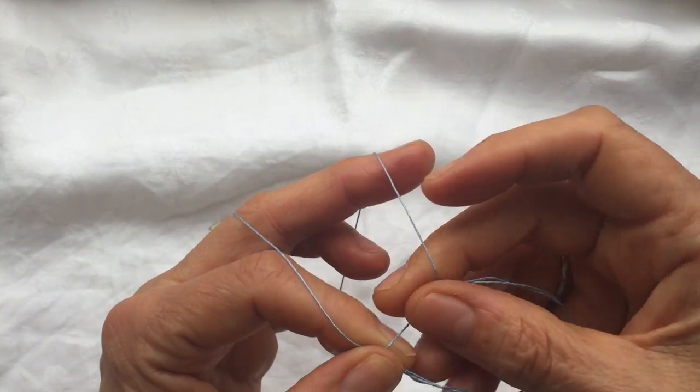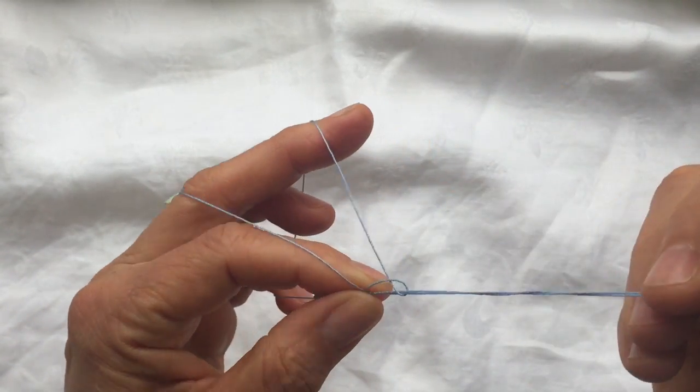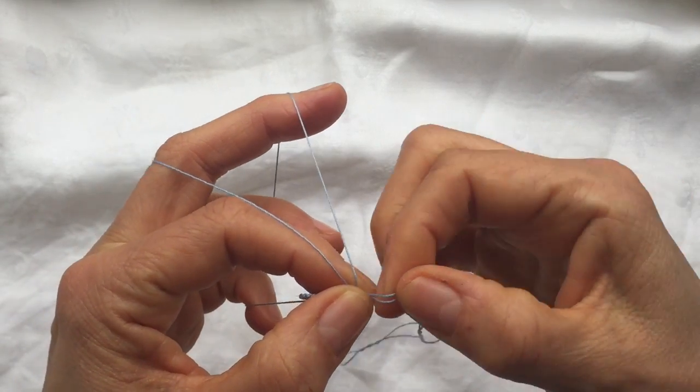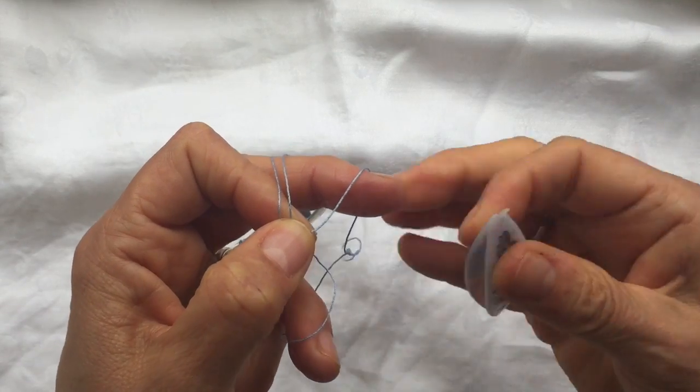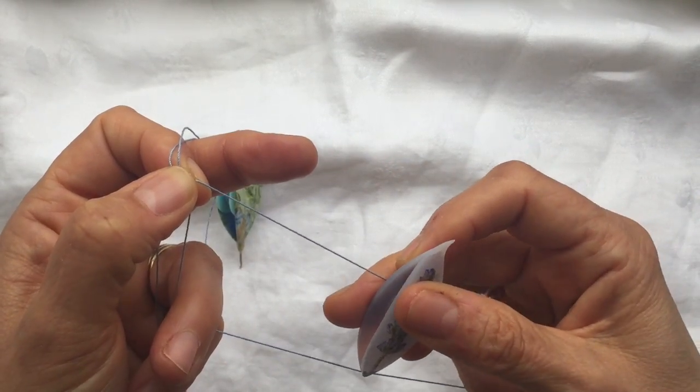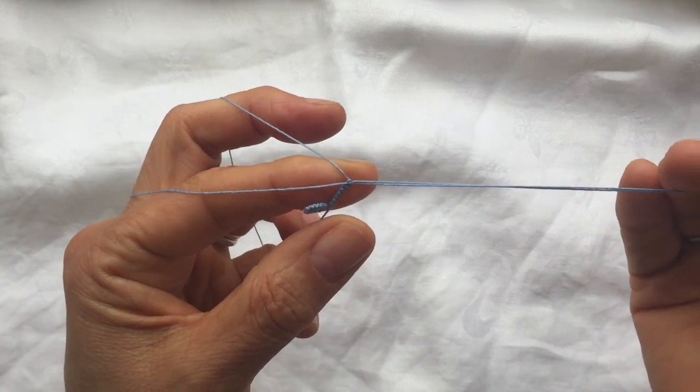So you can either tat, finger tat as they call it - that would be the first stitch. But I actually prefer to use a post shuttle and put it on my loop here like this.